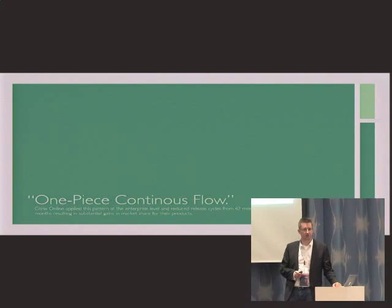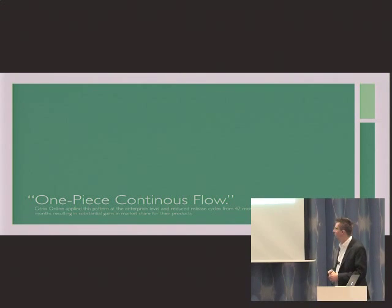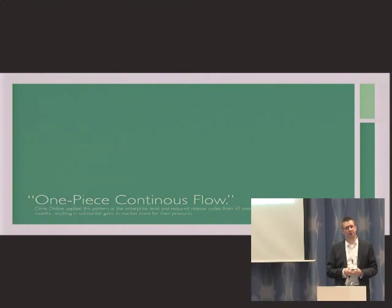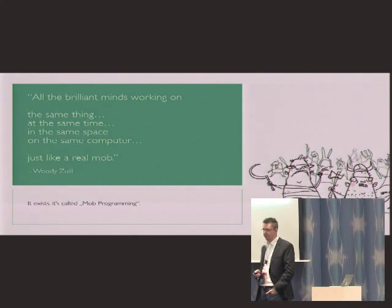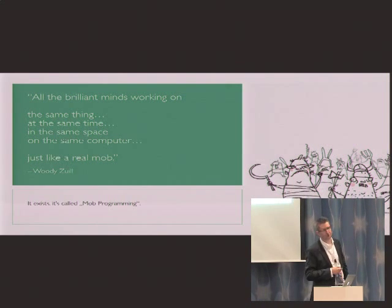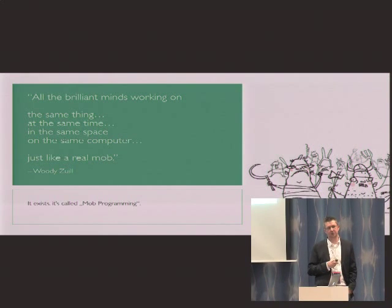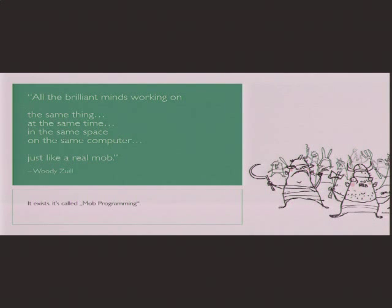It's called one piece continuous flow. Some would call it the uber Kanban. Citrix did it on the enterprise level for their portfolio management program. They came down from 42-month cycle time to 10-month cycle time. If you're sitting together, let's try mob programming. That's all people sitting in one room with one computer, five developers working on one keyboard. It's actually very funny, looks very good, and it's extremely efficient. It's totally counterintuitive to have five people, but in the end you're getting the right code and nothing more, and it works.